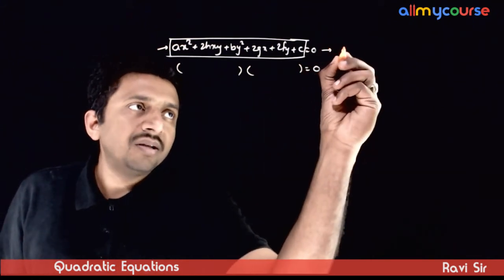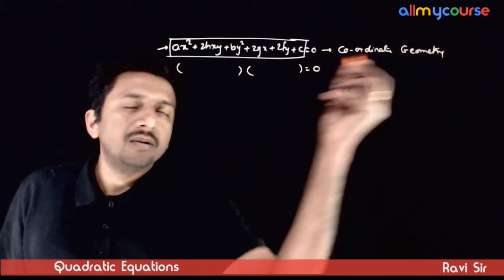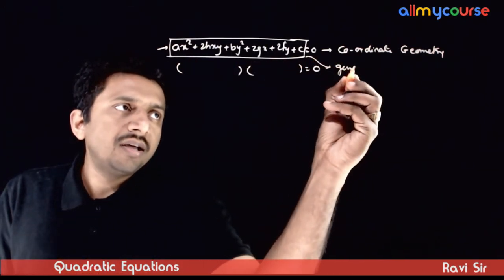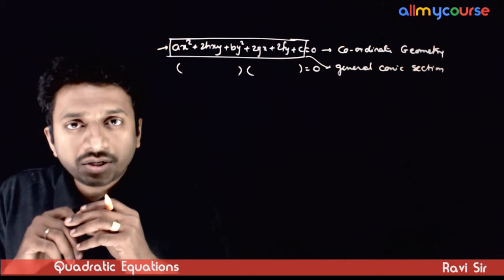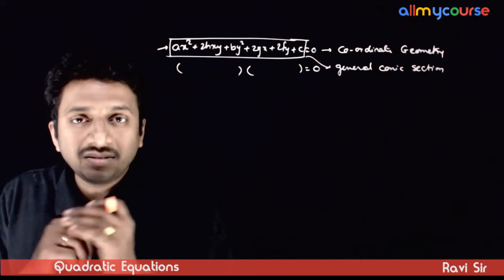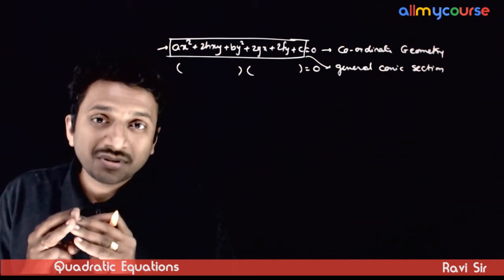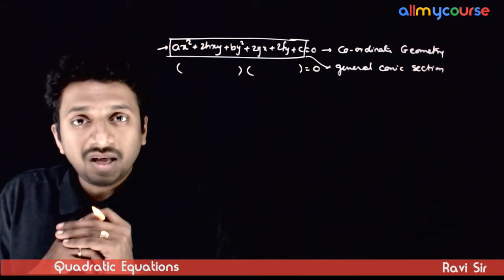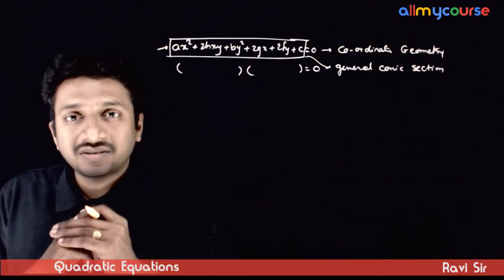This question becomes important in coordinate geometry. In coordinate geometry, this equation represents a general conic section. That means it might represent a pair of lines, it might represent a parabola, it might represent an ellipse, it might represent a hyperbola, or it might represent a circle. The question we are dealing with is: what is the condition that this equation represents a pair of lines?